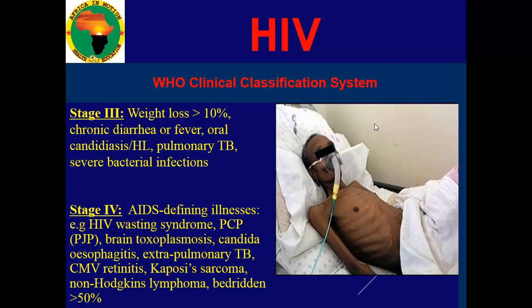Stage 3. The patient will lose weight which is more than 10%. With our example of 70 kg, the patient will lose more than 7 kg — unexplained. Or chronic diarrhea, just diarrhea that is continuous; you treat it but it continues. Fever. Oral candidiasis. Or TB. And severe bacterial infections — the patient might start having abscesses.